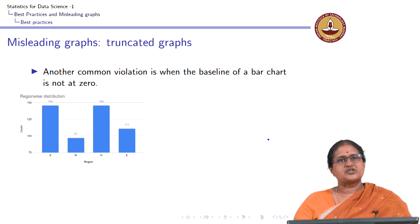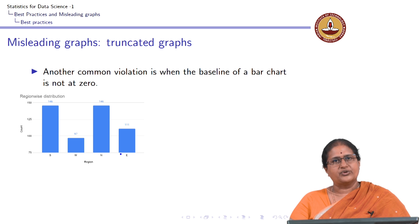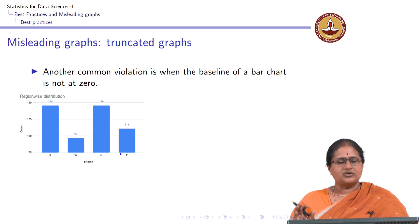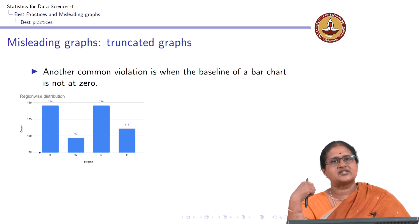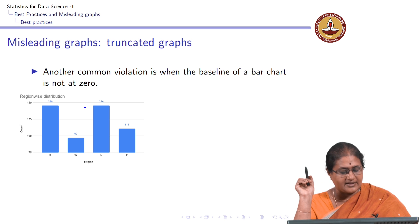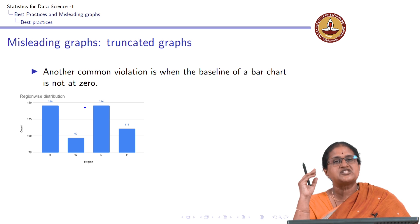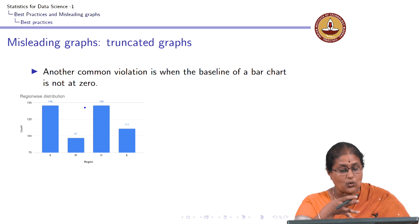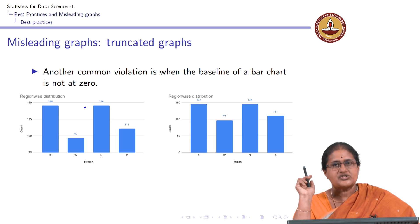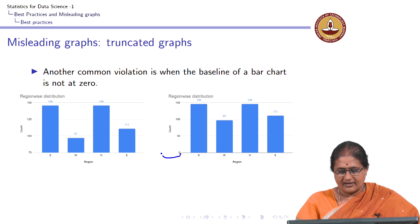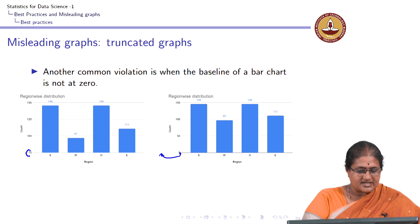This is a regional-wise distribution. I have four regions: south, west, north, and east, with 500 people. The data shows which region these 500 people come from. When I portray this graph, the immediate response for a person looking at it without examining the axis is to imagine that people from south and north are much higher than those from west or east. But when we look more carefully, one graph has a baseline starting at zero whereas the other starts at 75.